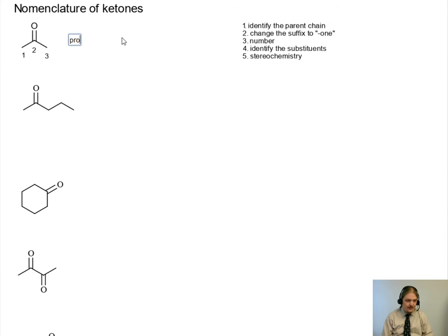So the parent chain here is propane, if it was an alkane. And we are going to change that to propanone. Now for ketones, it's important that we actually put the number, the locant, for the ketone. This is 2-propanone.